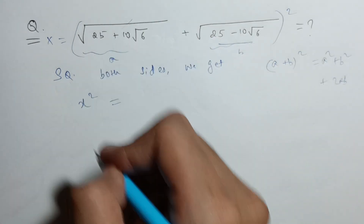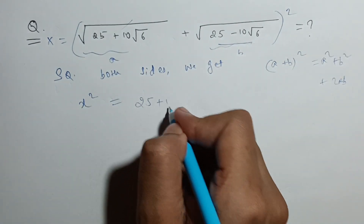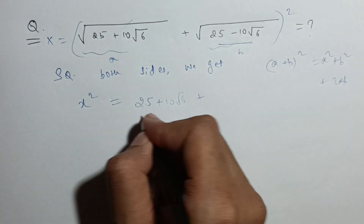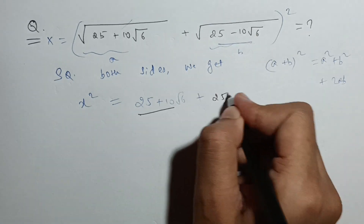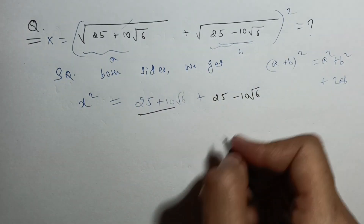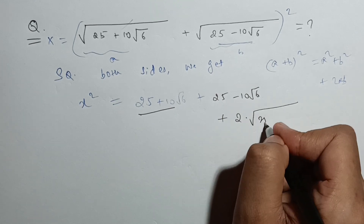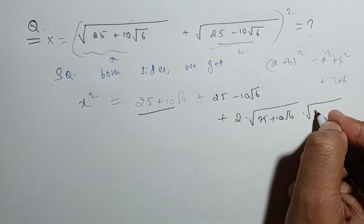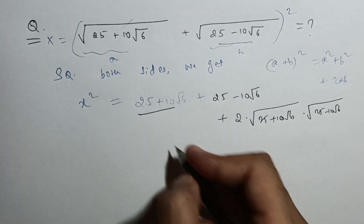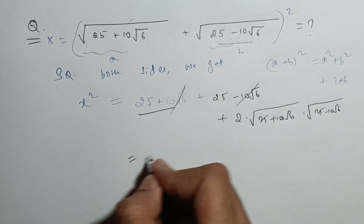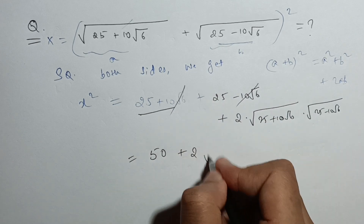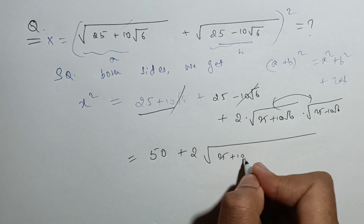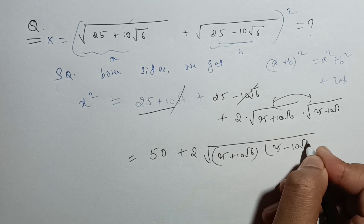So a² of this will cancel the square root. We get 25 plus 10√6, then 25 minus 10√6, and then 2 times square root of (25 + 10√6) times (25 − 10√6). The plus 10√6 and minus 10√6 terms will cancel out, giving us 25 plus 25.